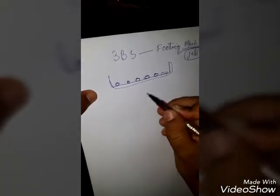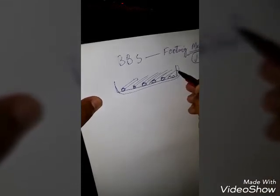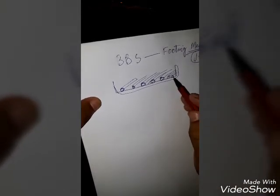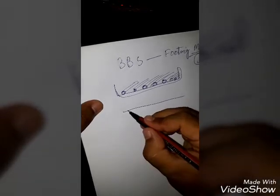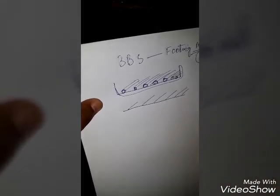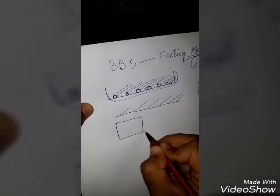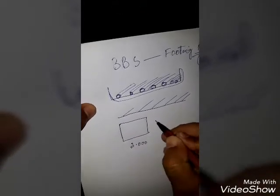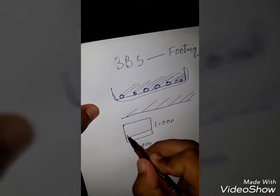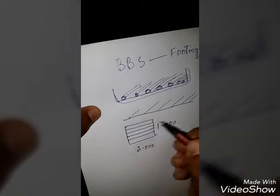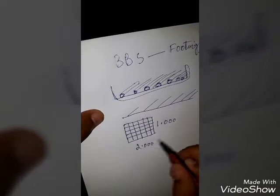If you see it vertically, the bars are arranged like this. The distribution bars are placed on top of the main bars — first we place the main bars, then we place the distribution bars on top. For this example, I have a footing of size 2 meters by 1 meter. The main bar runs along the 2-meter direction and the distribution bar runs along the 1-meter direction.